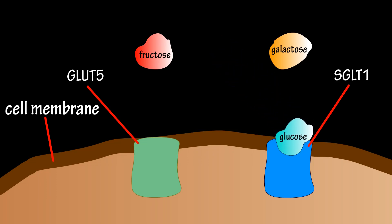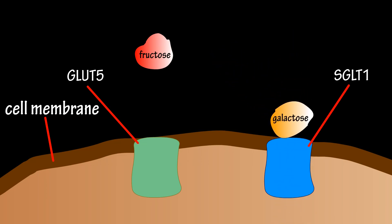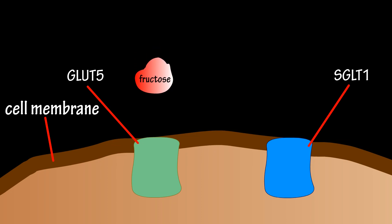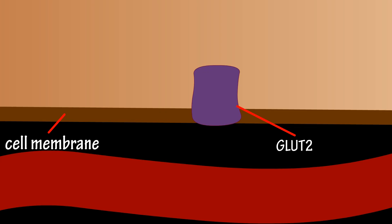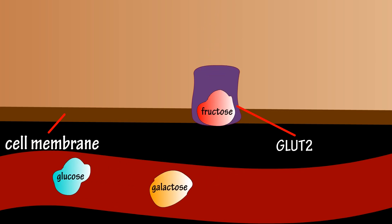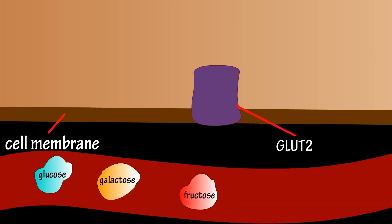Glucose and galactose are mainly absorbed into the enterocyte cells through an SGLT1 protein transporter on the membrane of the cell, and fructose is absorbed into the cells through a GLUT5 transporter. On the other side of the enterocyte cells, glucose, galactose, and fructose are transported out of the cell through a GLUT2 transporter into the blood, where they travel to the liver.